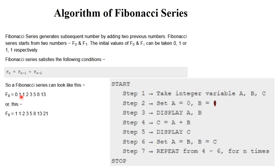Then calculate one plus one equals two. In this way, each step repeats, changing the values with preceding and subsequent numbers. Two plus one equals three, three plus two equals five — this subsequent series, adding with previous numbers, is generated. This is the Fibonacci series concept.